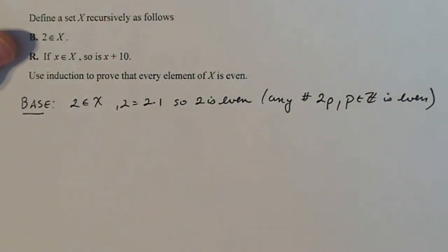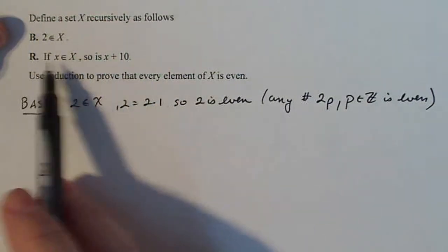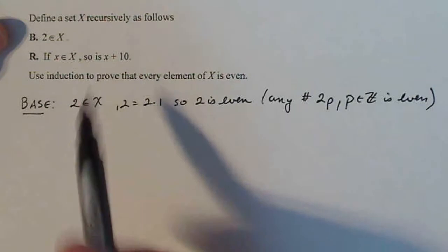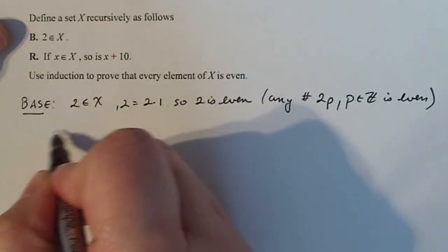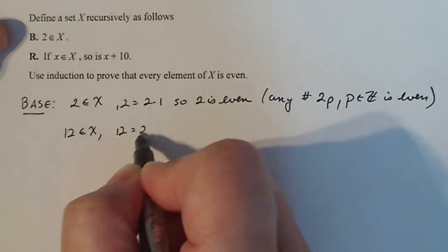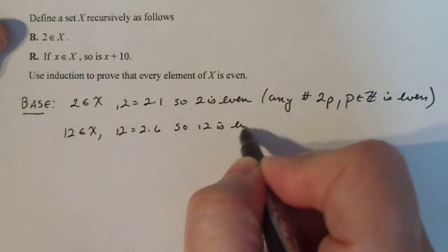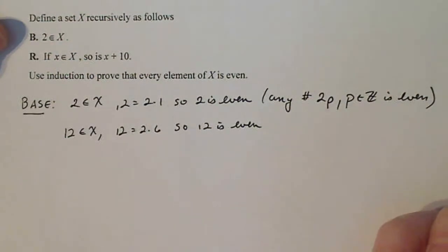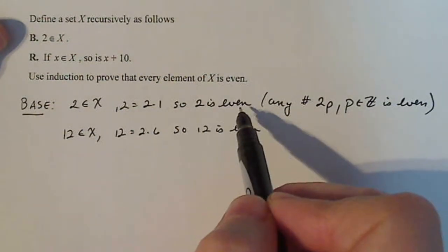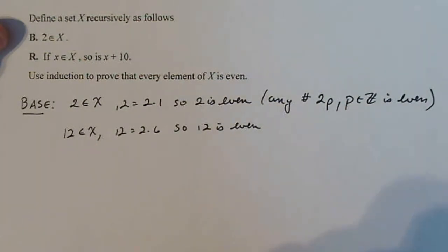So if you want to check another base just to see what happens, if 2 is in X that means according to this next line that 12 is in X. So 12 is in X, I can write 12 as 2 times 6, so 12 is even. Okay, again you only have to show this one but I'm doing this one for my health to make sure I know what's going on.